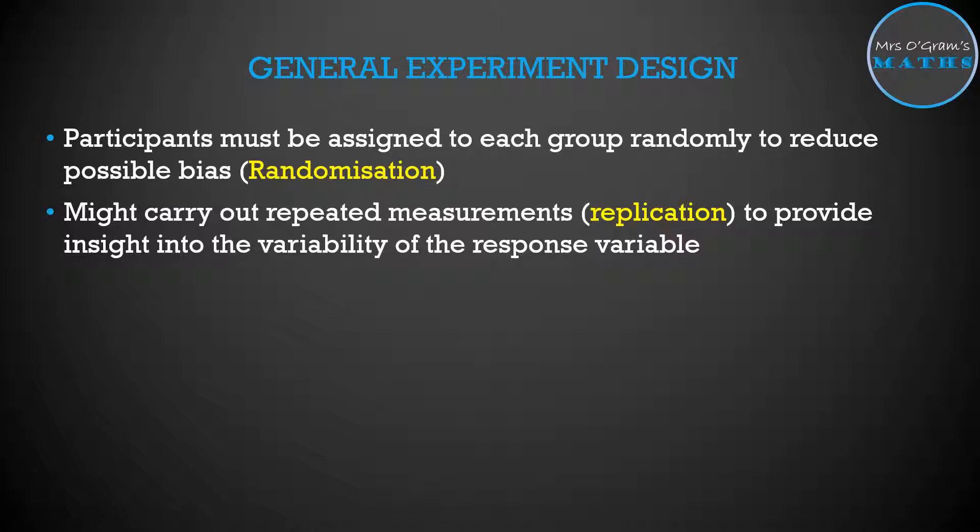You might also carry out repeated measurements. This would be referred to as replication so that you can try to understand anything about the variability in your response rates. With the memory one, you might get them to do that memory test on three different paragraphs of text that they need to try and memorize or three sets of numbers that they're trying to remember the order of, whatever it is that you're setting up. Instead of just doing it once, you would do it a handful of times for each participant to get more reliable results.